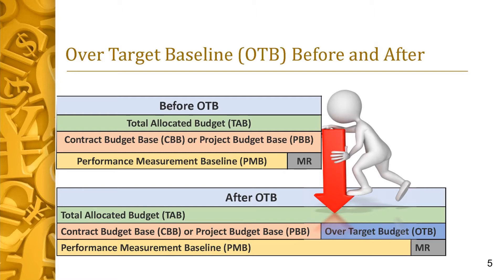Total allocated budget is above the CBB or PBB and includes the CBB or PBB plus the OTB. This graphic illustrates that the baseline target, i.e., the CBB or PBB, is unchanged, and the PMB is changed by adding budget to create an executable baseline based on the recognized significant overrun. An OTB may not affect all the work in the baseline. A partial OTB does not affect all work breakdown structure (WBS) elements in the PMB, and does not make across-the-board cost schedule variance adjustments.